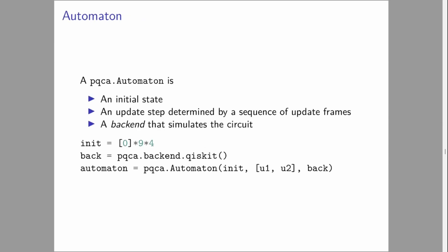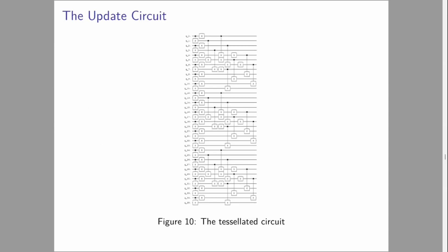This brings us all the way to an automaton. All an automaton is, is the initial state and a way of advancing to the next state. For us, that is the sequence of update frames we've just defined. We also need a backend that simulates the circuit. If you happen to have a quantum computer lying around, you can set it up to that. But fundamentally, it just needs some way of evaluating the update. This is the update circuit, and I hope you can understand why I didn't particularly want to draw it out by hand. This is a tessellated circuit on 9x4 cells. The quantum computer doesn't need to know anything about our tessellation. It just operates on a list of qubits.